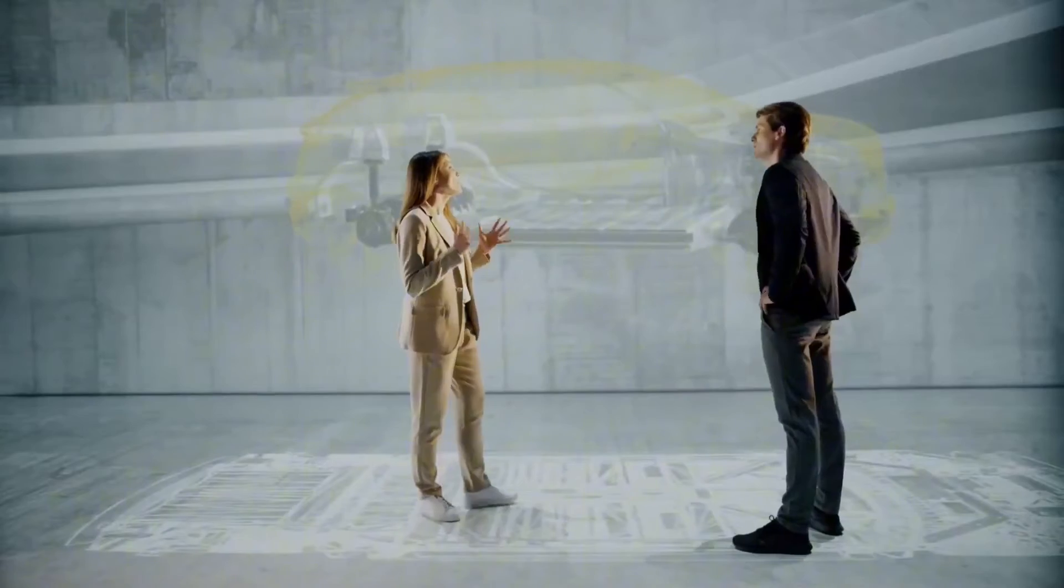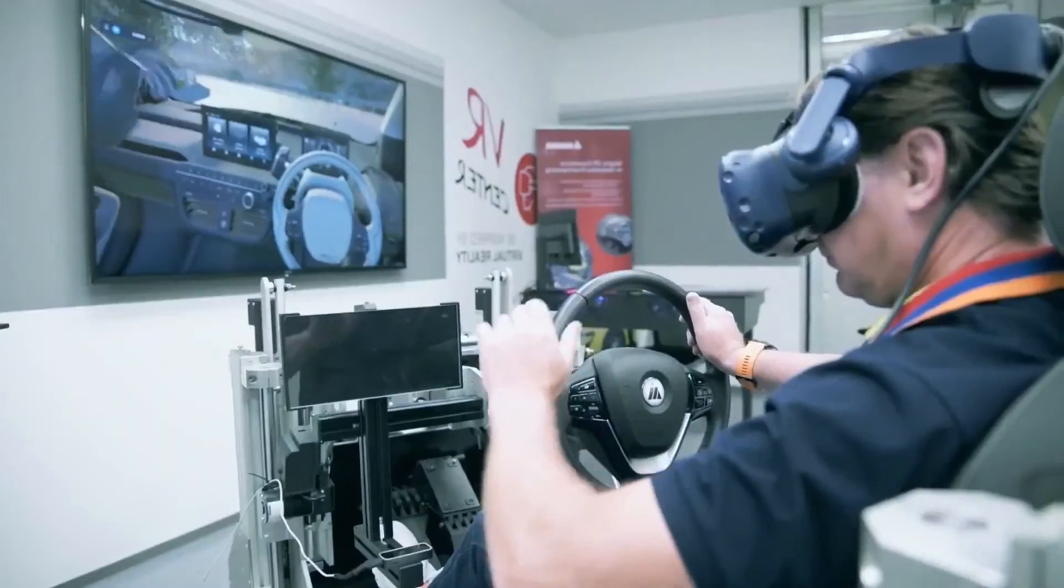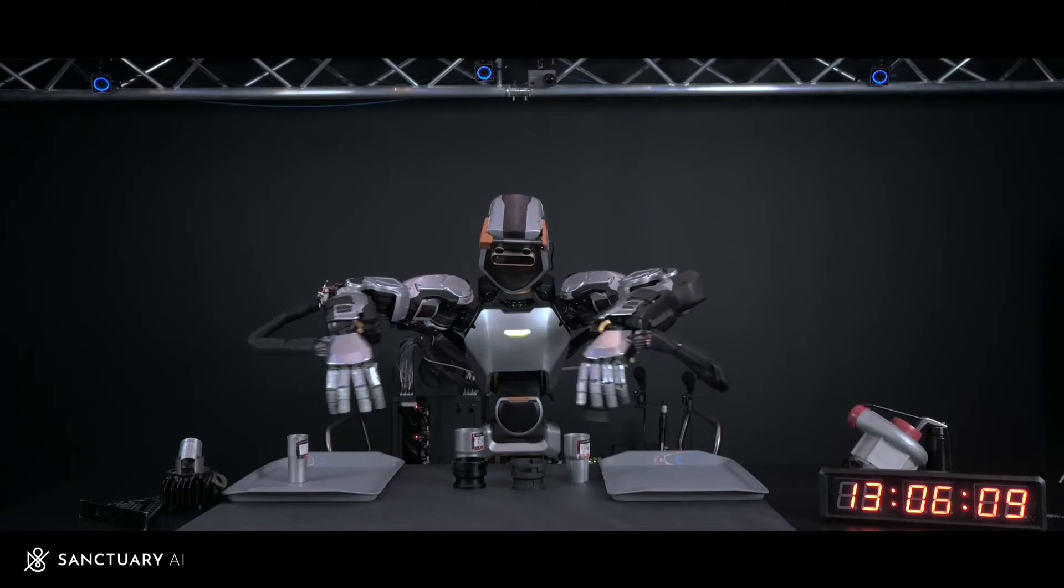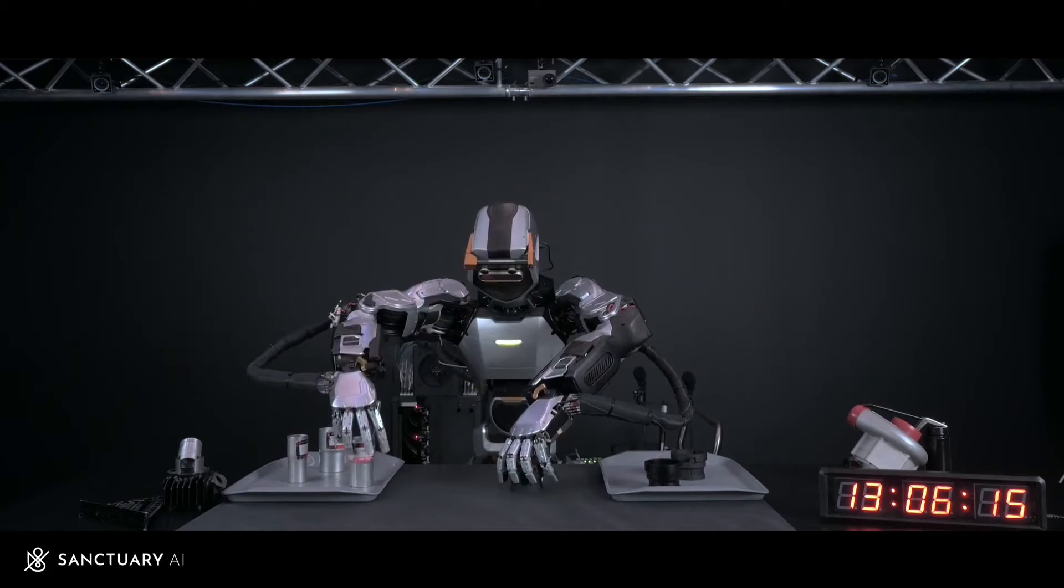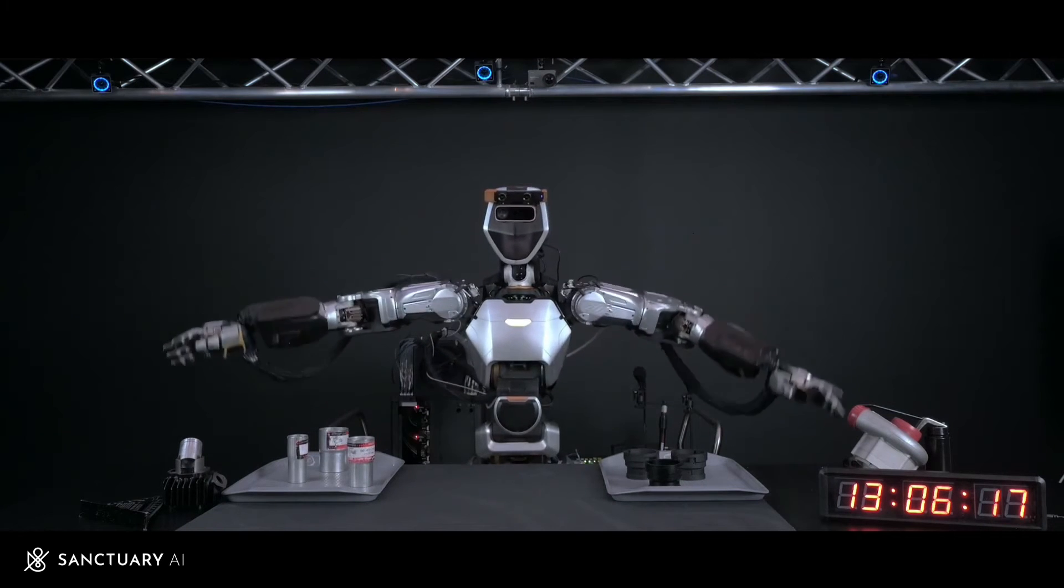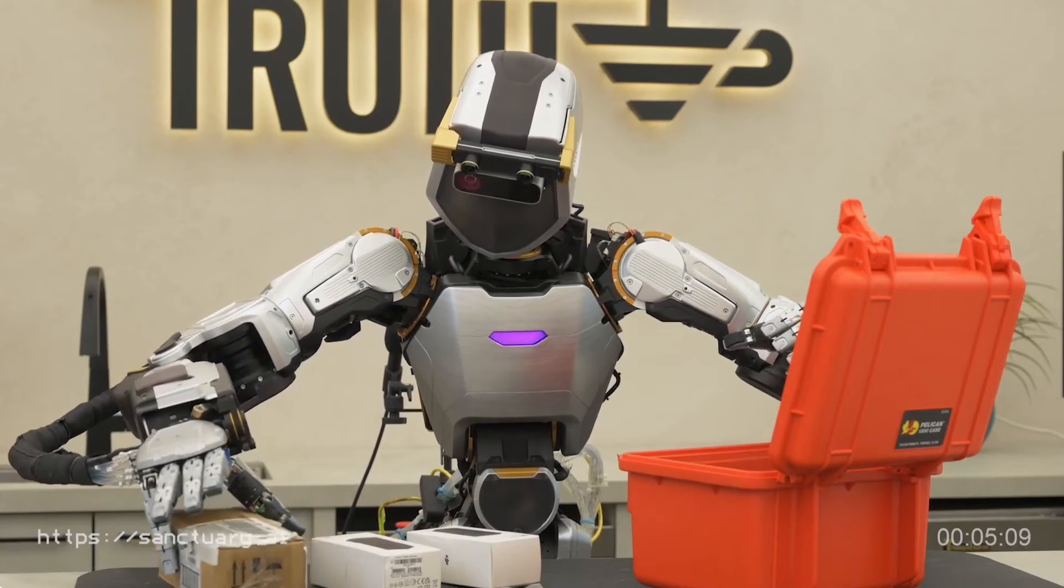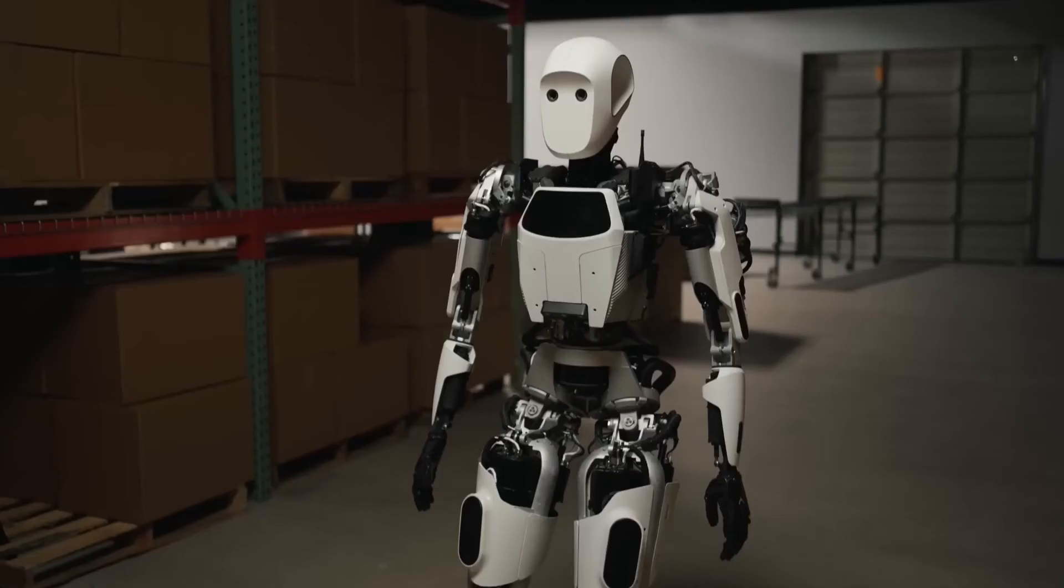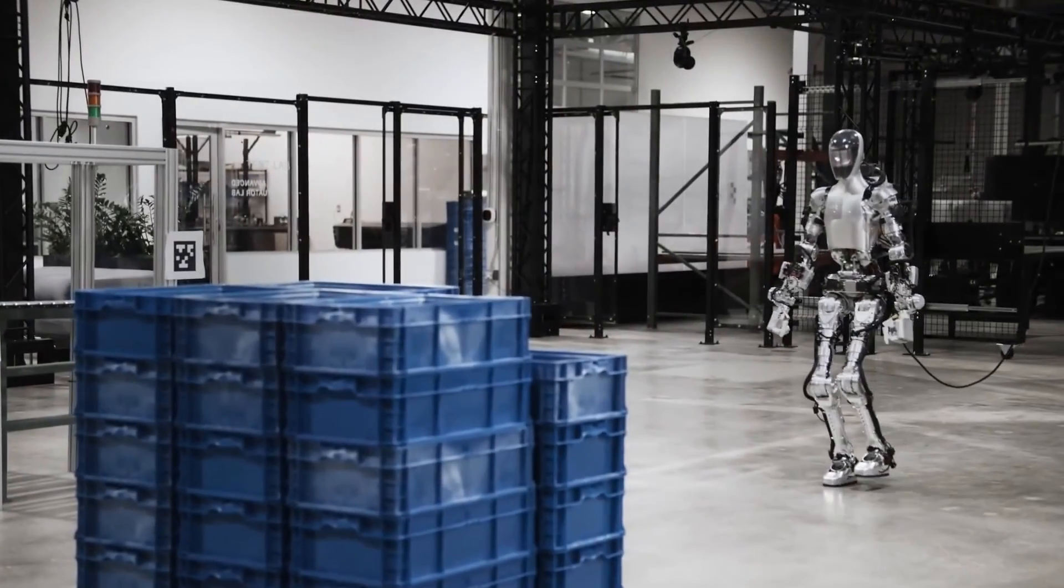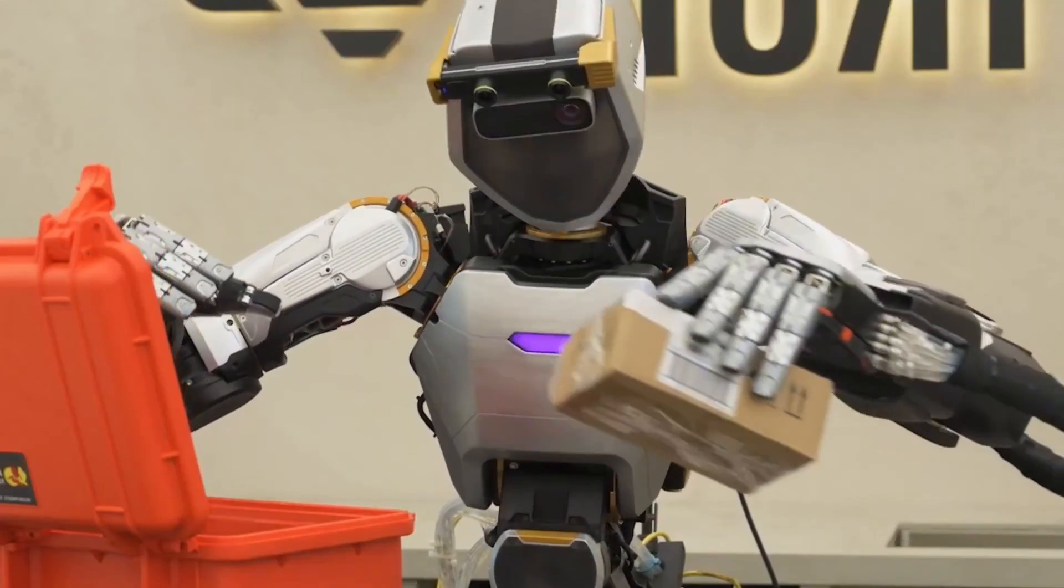Sanctuary AI's commitment to the development of humanoid robots is evident in their deployment of earlier systems and their recent deal to bring their robots to Magna auto manufacturing facilities. The company's vision of robots that are closely analogous to humans in form and function is becoming a reality, and the seventh generation Phoenix is a testament to that vision. As we look to the future, the advancements in humanoid robotics, particularly in terms of intelligence and learning capabilities, will continue to shape the way we think about work, collaboration, and innovation. If you're interested in learning more about Sanctuary AI and the Phoenix robot, be sure to leave a comment below.